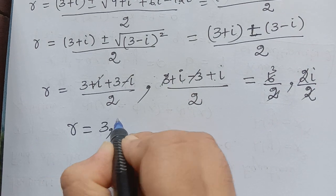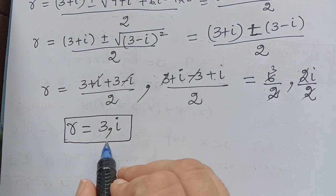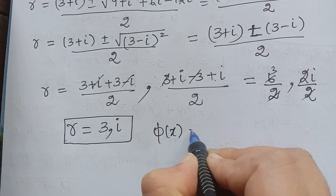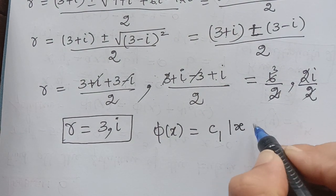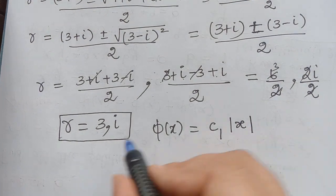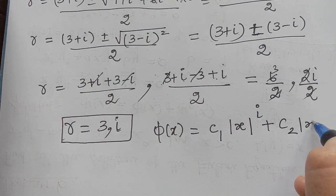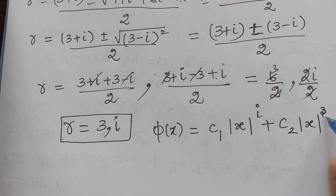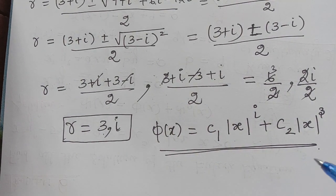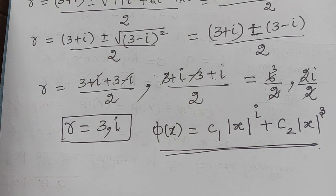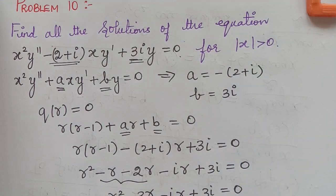So the two roots are r equals 3 and r equals i. Now we write the solution: phi(x) equals c1 times modulus of x to the power i, plus c2 times modulus of x to the power 3. This is the solution obtained for the given Euler's equation. Hope you have understood this problem — this is one of the significant problems. Thank you.